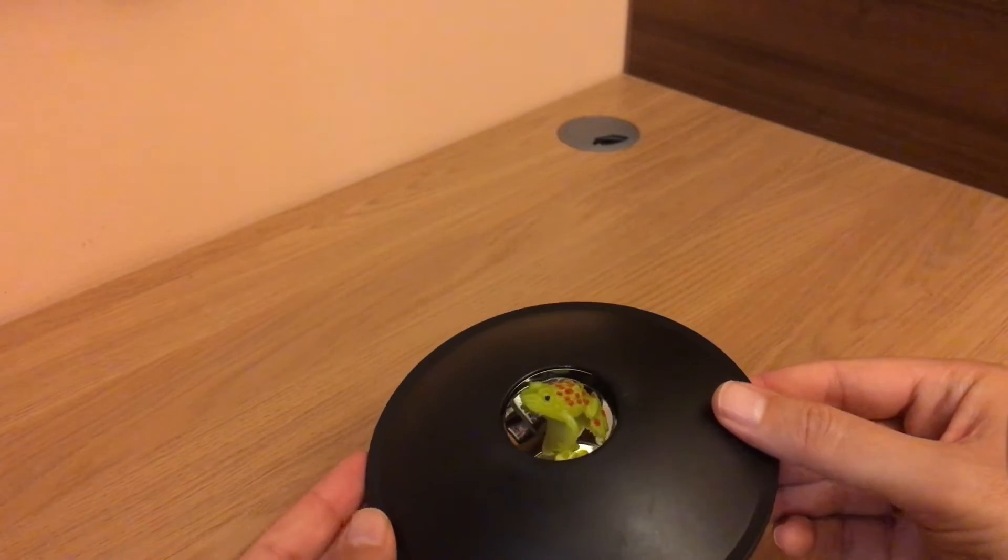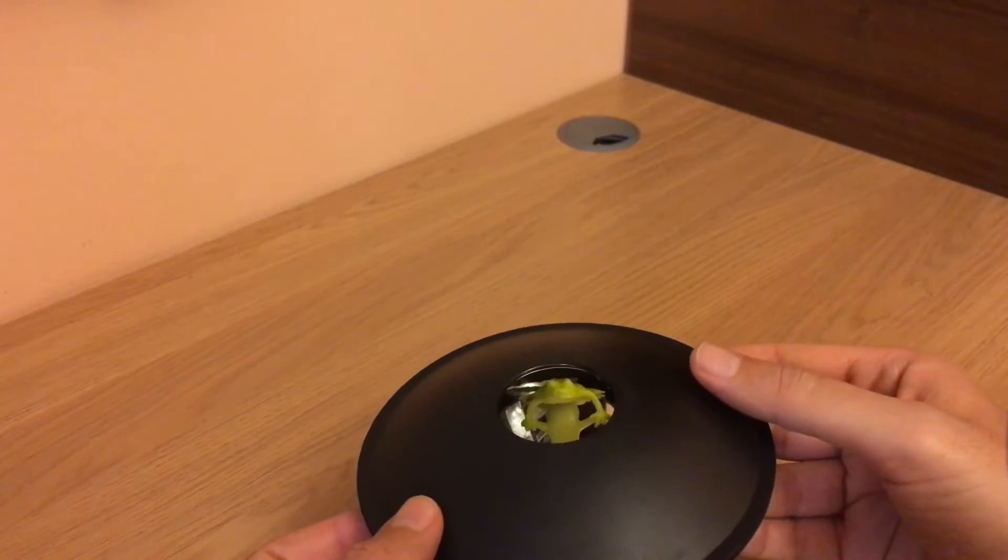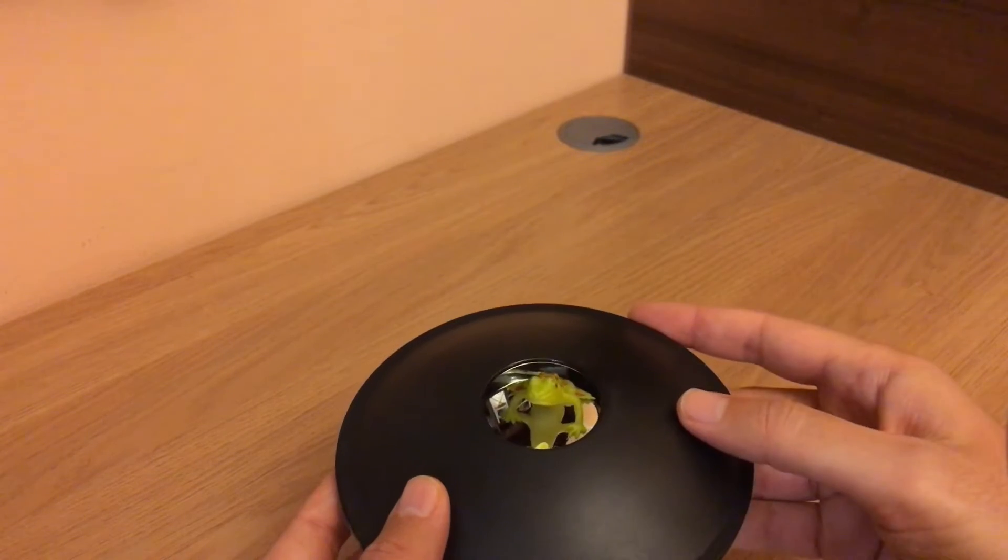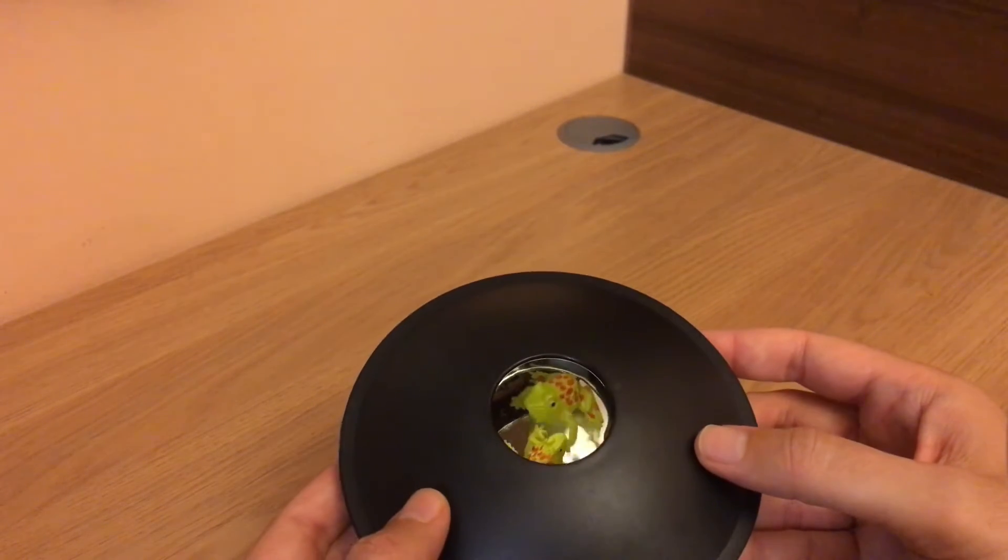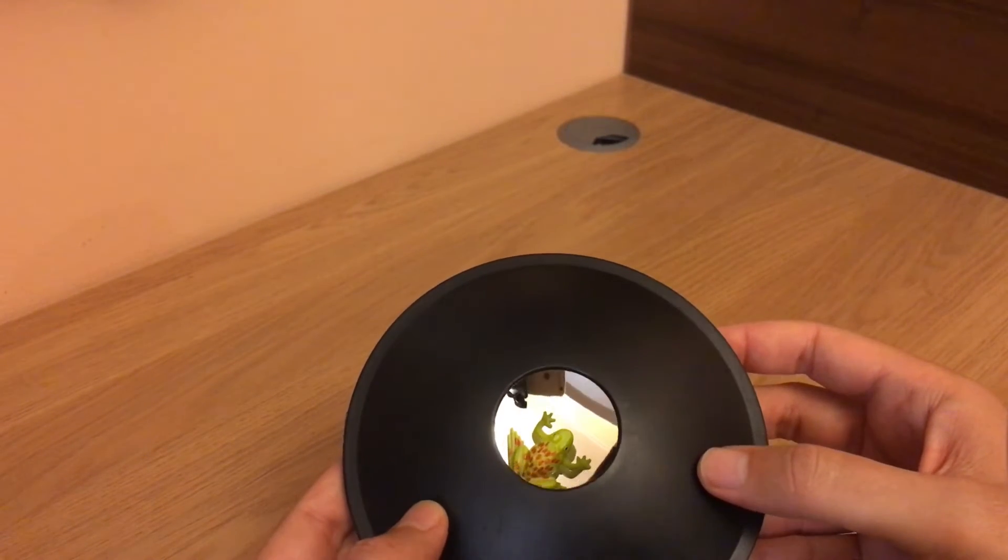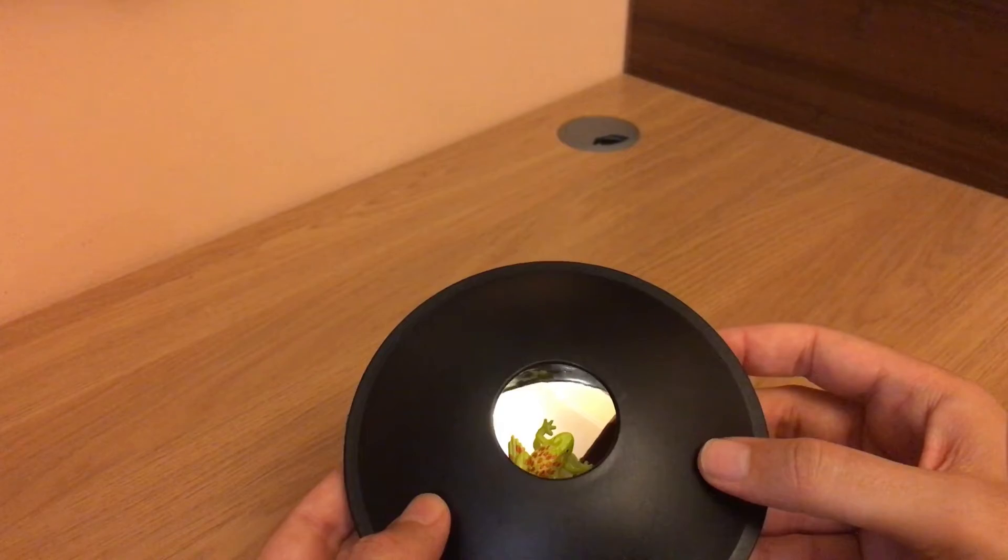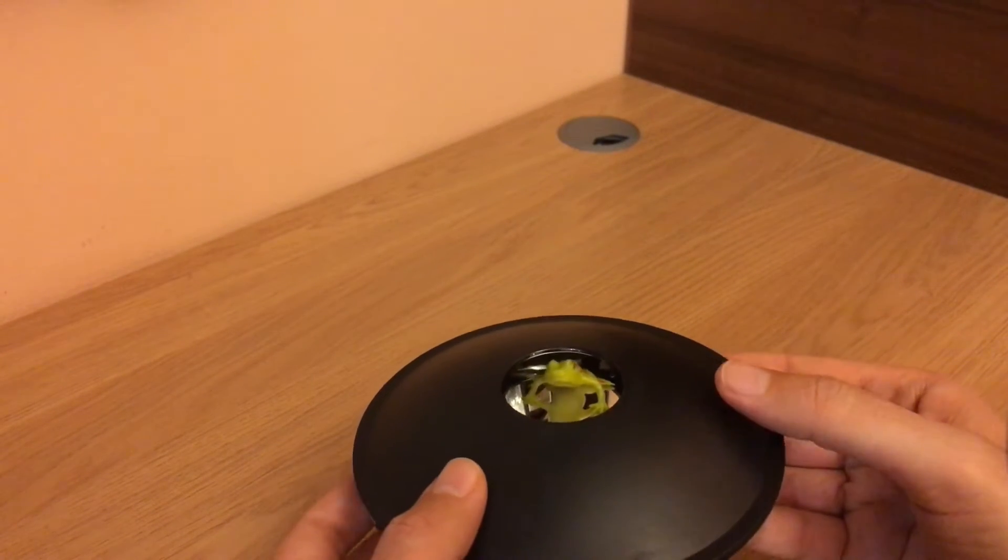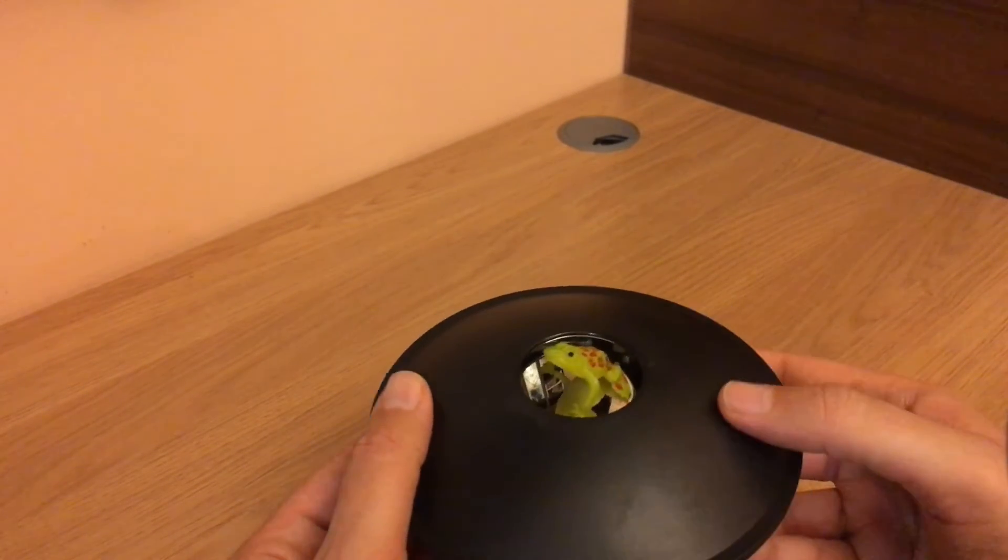You can see the real frog sitting at the bottom of the first concave mirror and then the image is projected over here. Again, the real frog, and if I twist it a little bit you see the image which is just at the top of the opening.